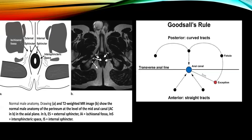This is the normal MRI anatomy of the male pelvis. You can see the ischioanal fossa, the anorectal canal, the internal sphincter, the external sphincter, and the intersphincteric space. When discussing fistula, Goodsall's rule is a must.